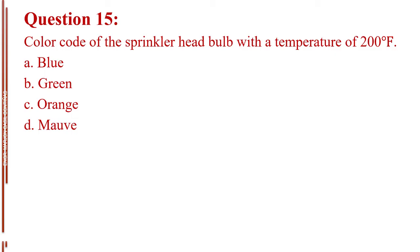Question number 15. Color code of the sprinkler head bulb with a temperature of 200 degrees Fahrenheit. A. Blue. B. Green. C. Orange. D. Mauve. The answer is Letter B, green.